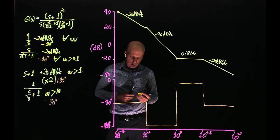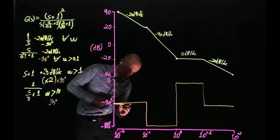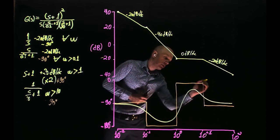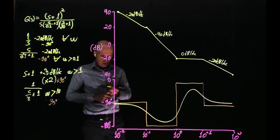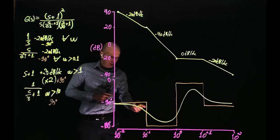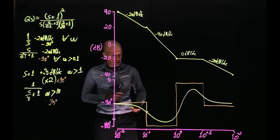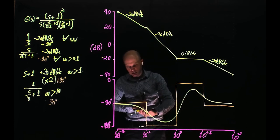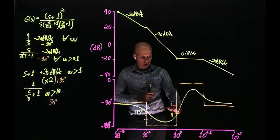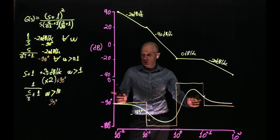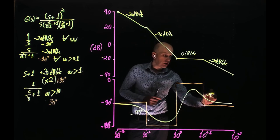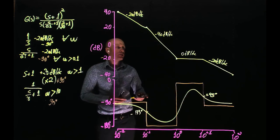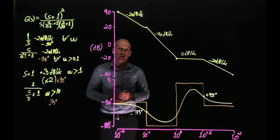Now we can attempt to interpolate this. It will be something like that — at the midpoint before 0.1 it should be around negative 45 degrees, here around negative 135 degrees, then around zero, and this point here should be halfway at positive 45 degrees. And this is the approximate phase of the function G(s).